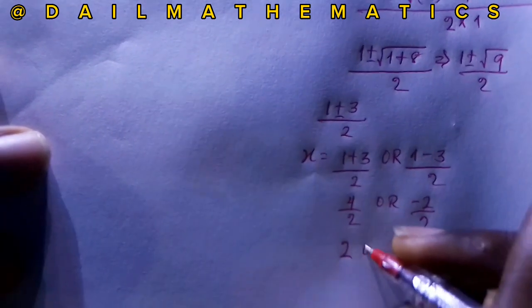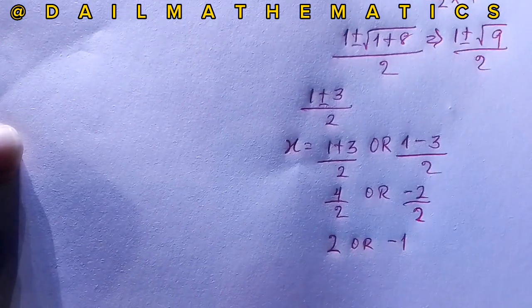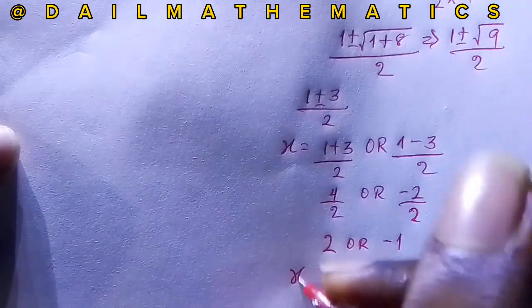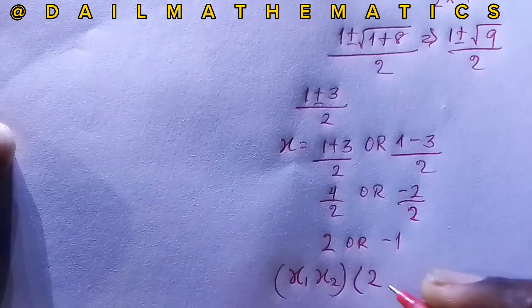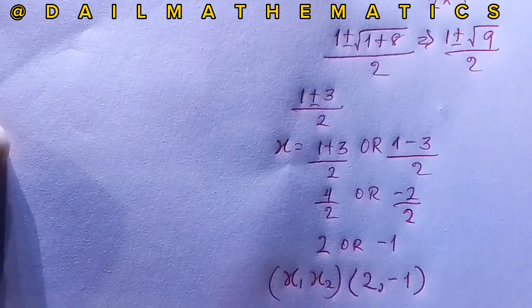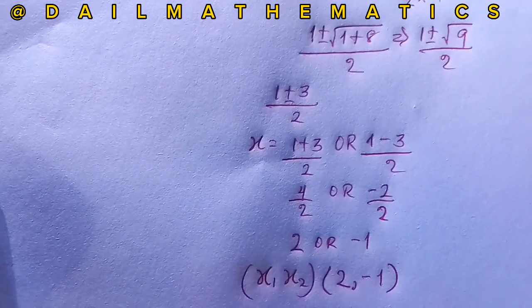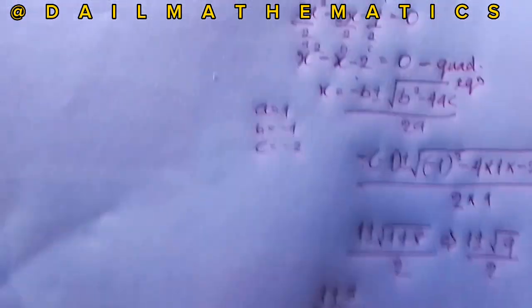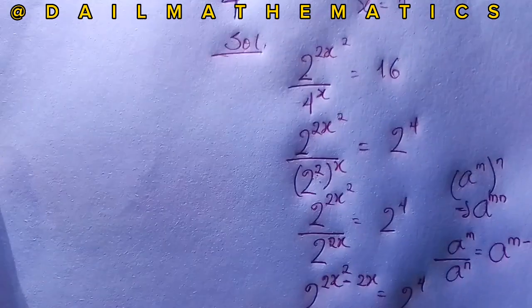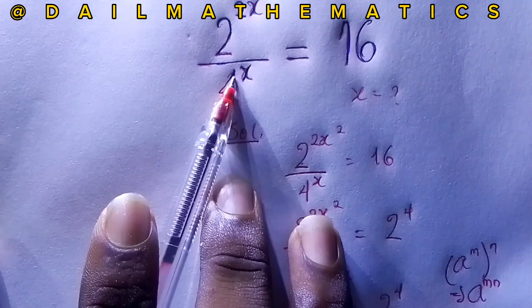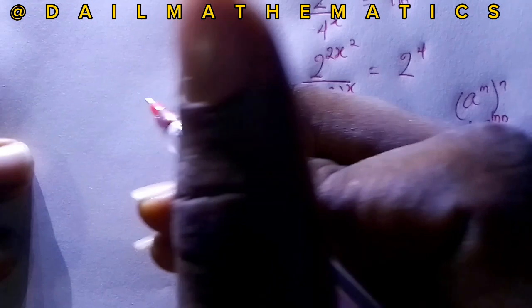Therefore x₁ equals 2 and x₂ equals −1. We have two values of x: 2 and −1. Now let's verify both values in the original equation: 2 raised to the power of 2x squared, divided by 4 raised to the power of x, equals 16.